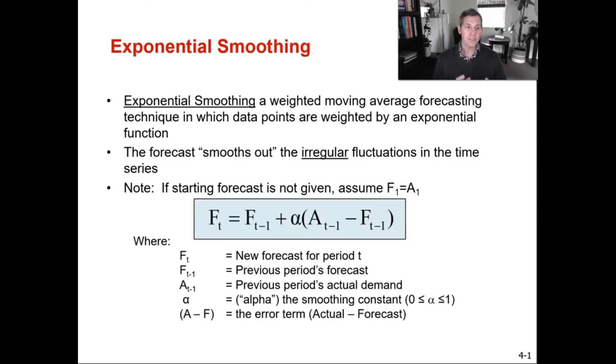So you can see on the screen you've got your formula for exponential smoothing and in this formula F_t is your new forecast for period t. F_t-1 is your previous period's forecast. A_t-1 is your previous period's actual demand. And then α, your lowercase alpha, is your smoothing constant.